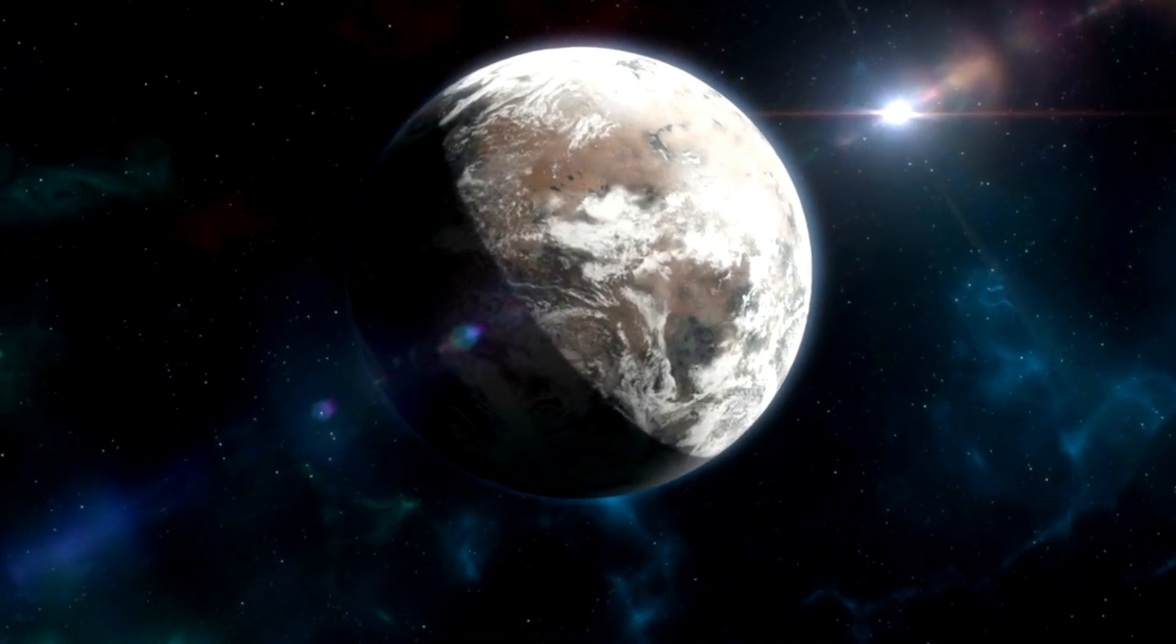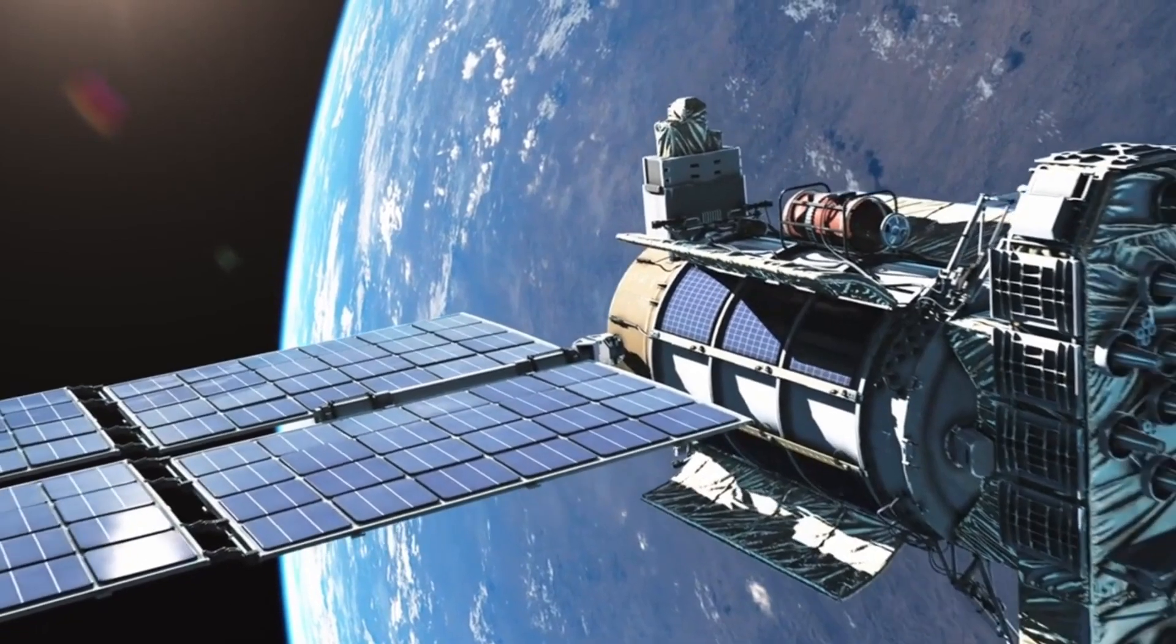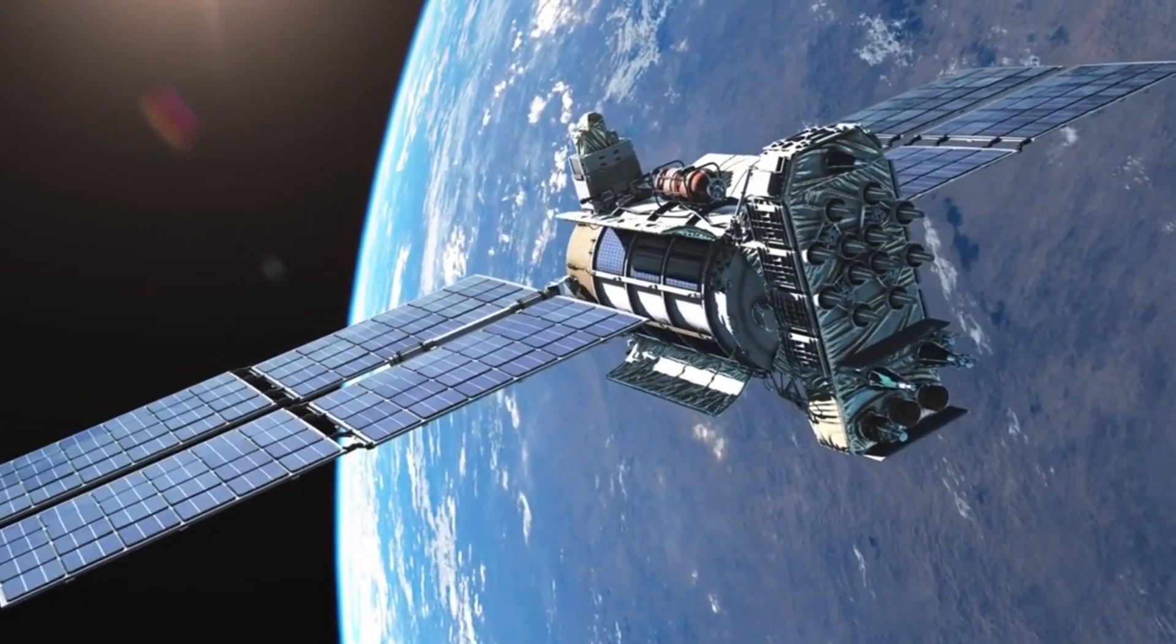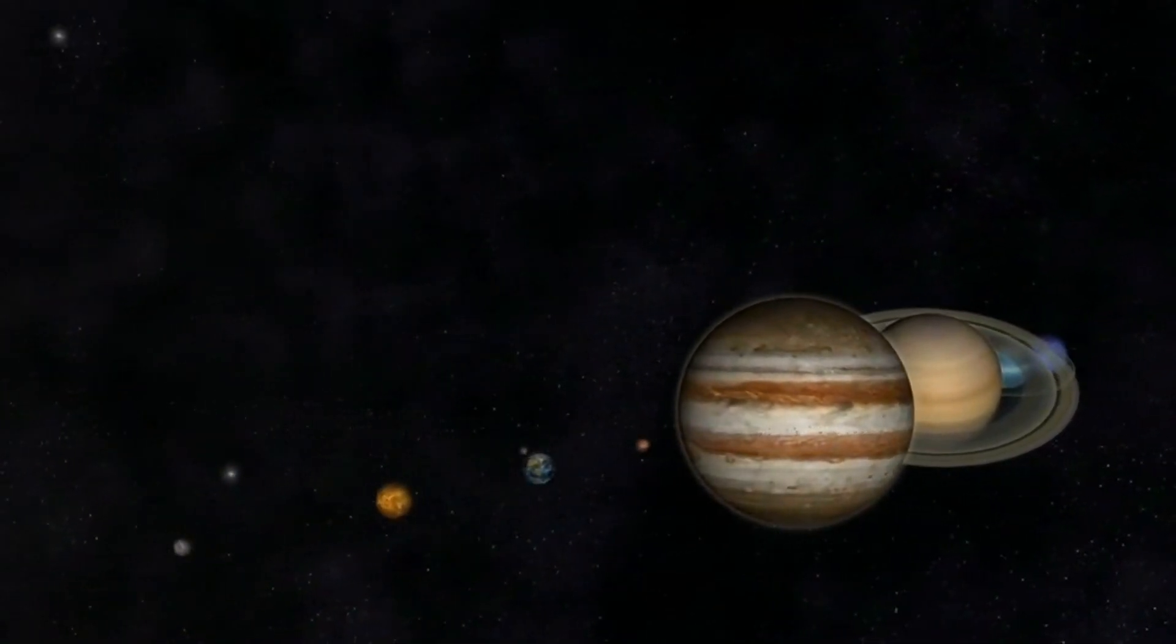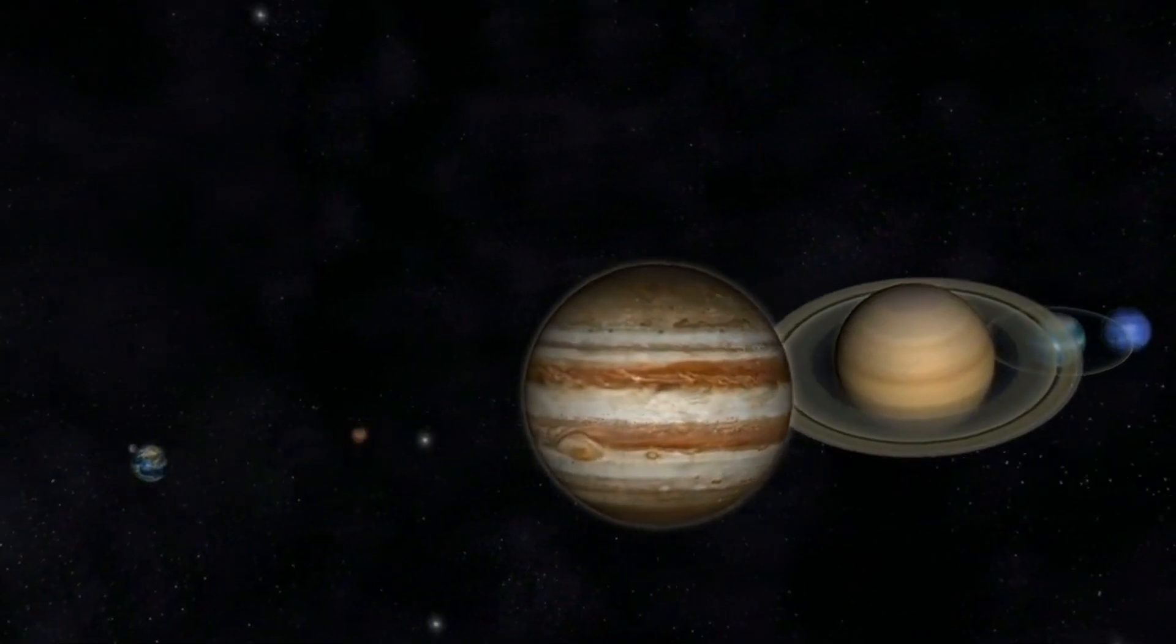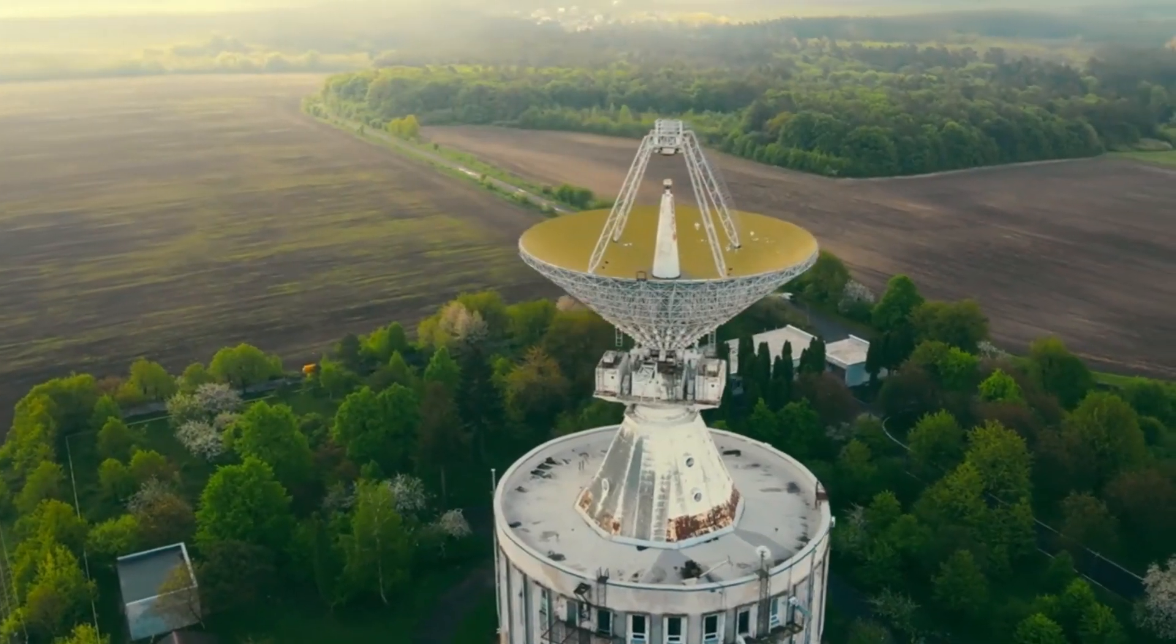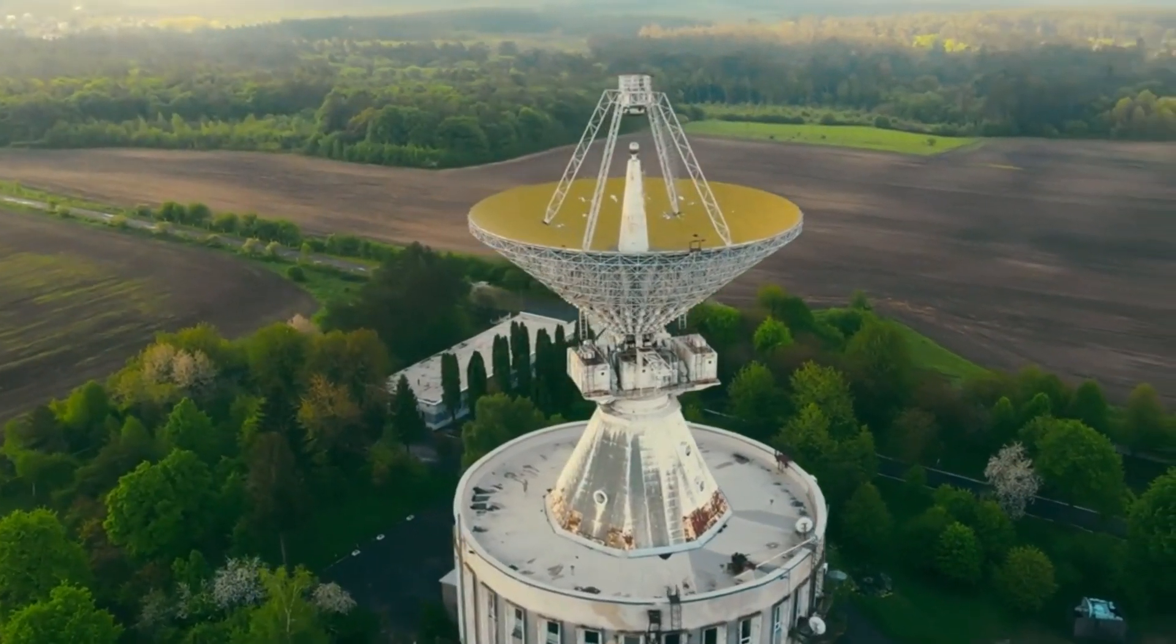However, studying exoplanets comes with its fair share of challenges. Both Kepler-442b and TOI-700E are incredibly far away. At the speed of light it would take over 1,200 years to reach Kepler-442b and a century to reach TOI-700E. This immense distance makes direct observation and exploration nearly impossible with current technology.